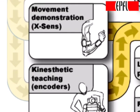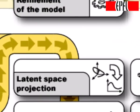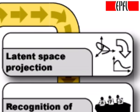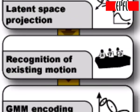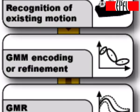In the Encoding phase, a latent space of motion is found by linearly projecting the data onto a subspace of lower dimensionality using principal component analysis. Recognition of the gesture is performed in this latent space. If the gesture is not recognized by the existing models, a new model is created. A probabilistic representation of the data is then learned by estimating a Gaussian mixture model.